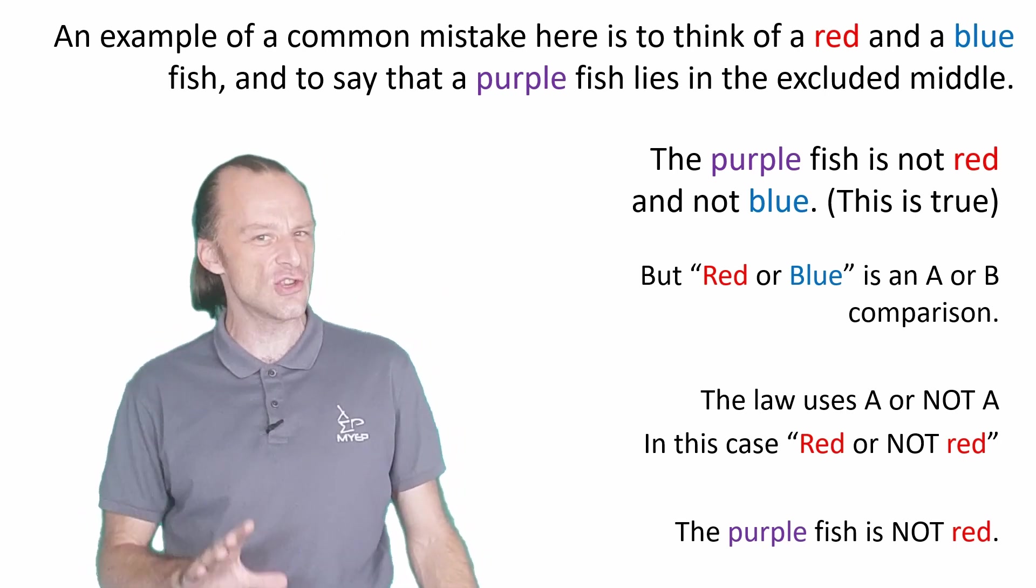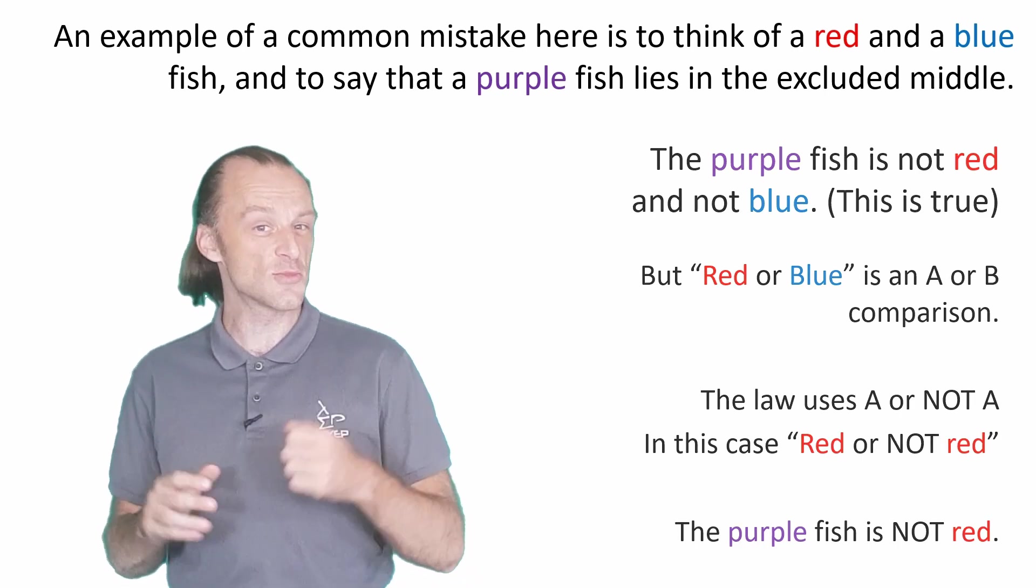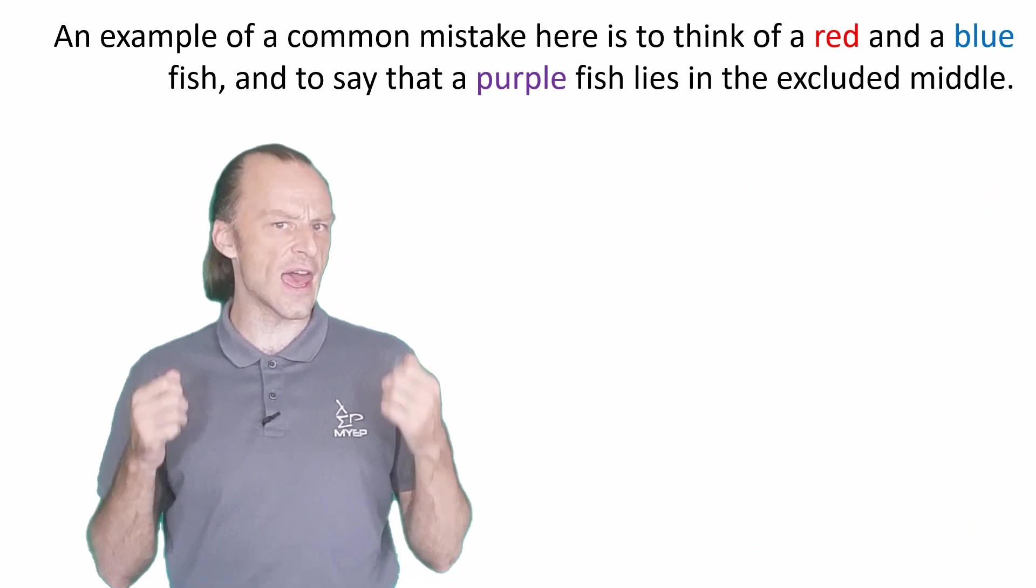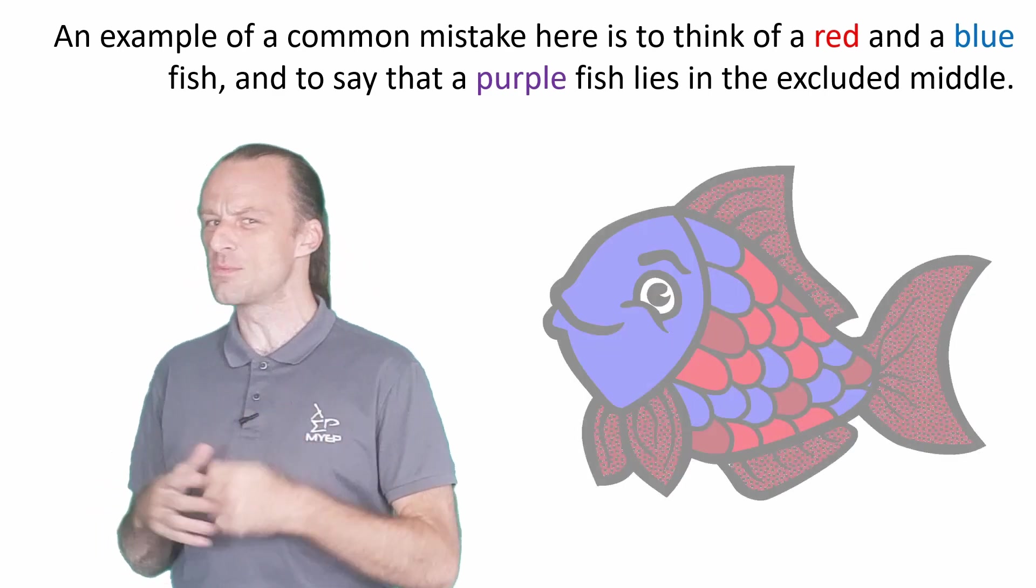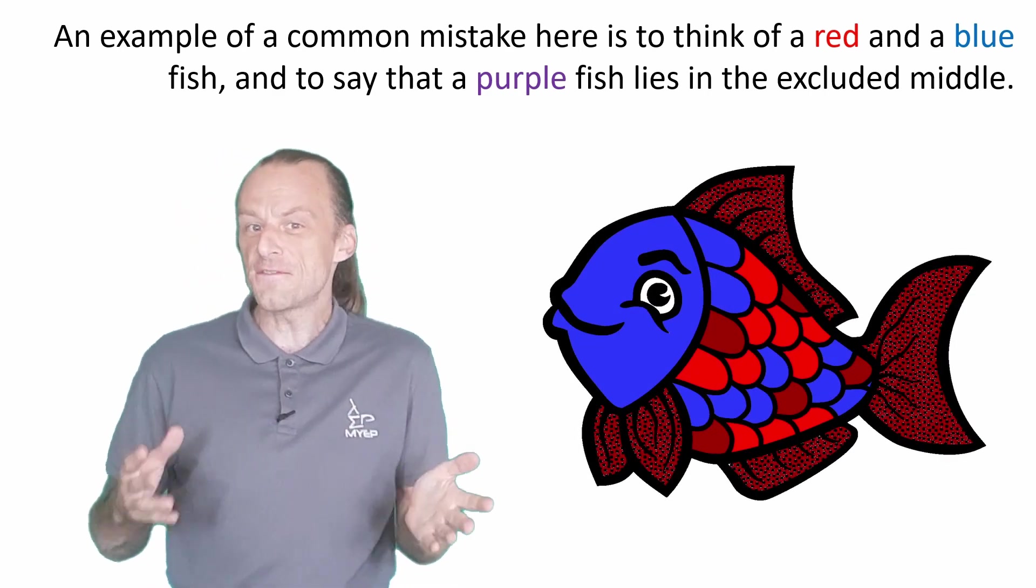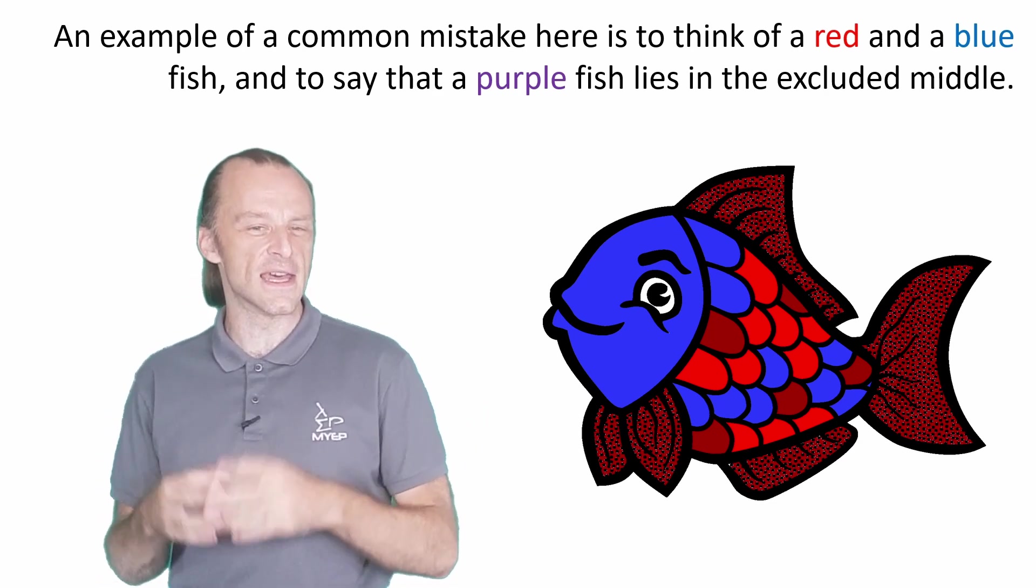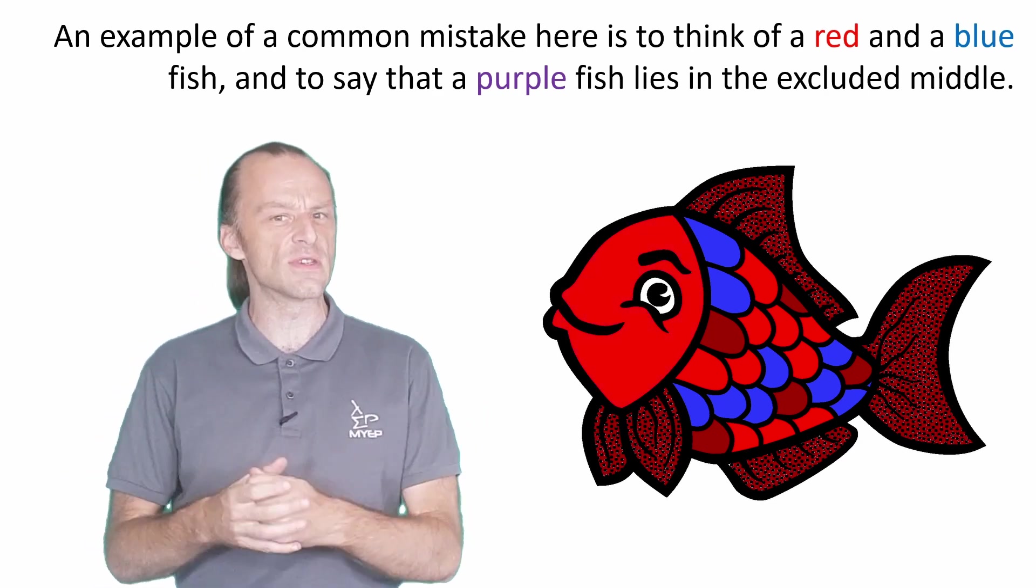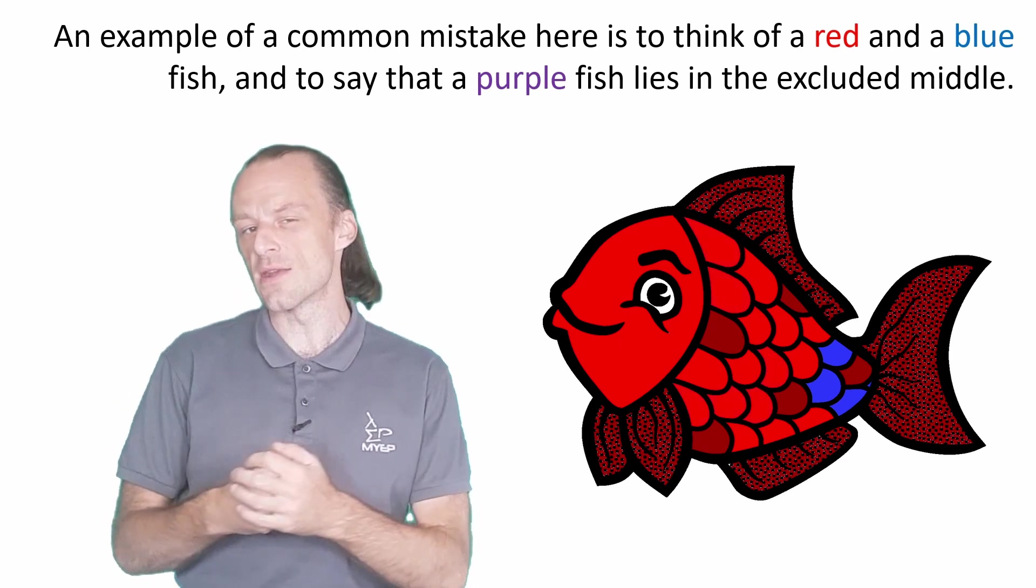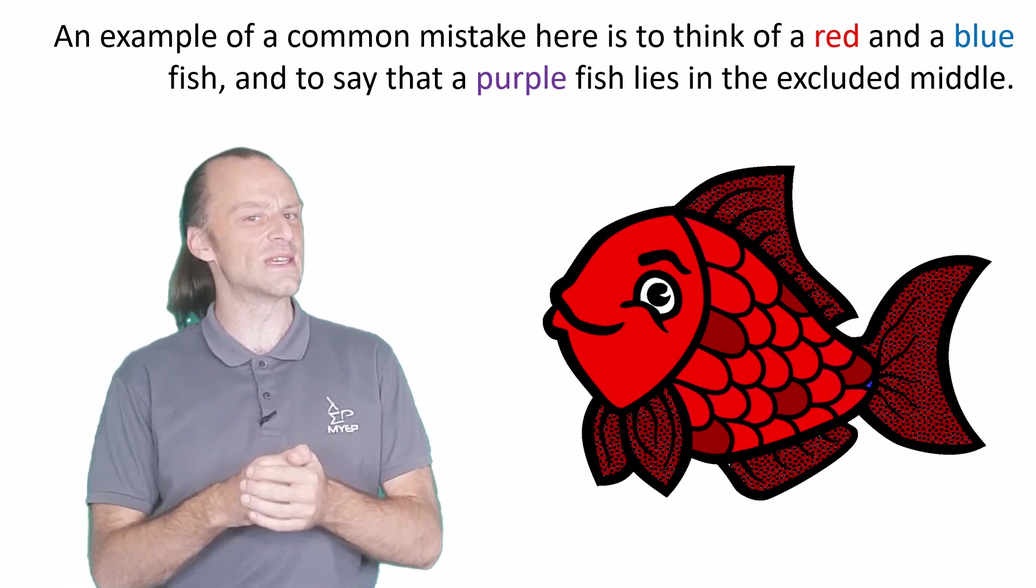However, we can use this example to see some tricky cases. First of all, what if you have a fish that is red and blue? If the fish is 50% red and 50% blue, we should probably say that it's not red. But what if it is 70% red? Or 90% red? Or 99% red?